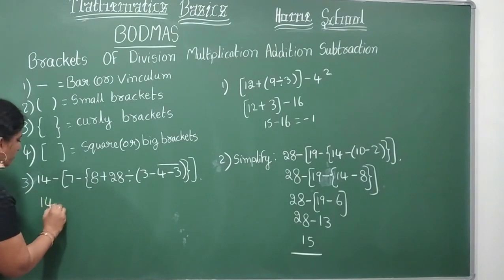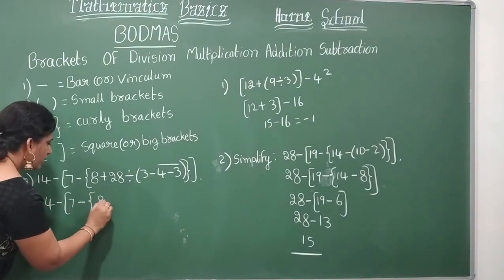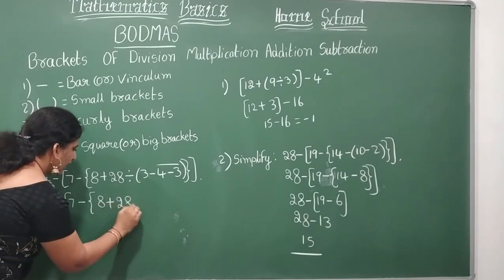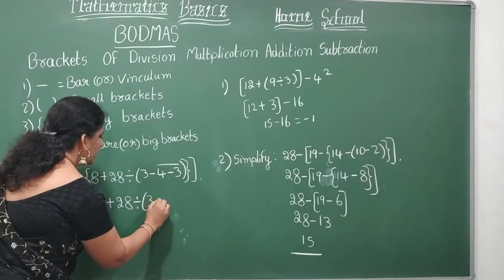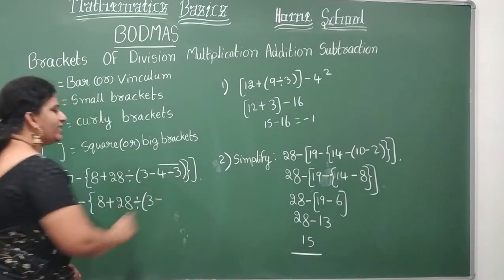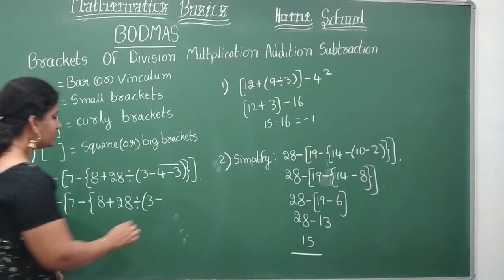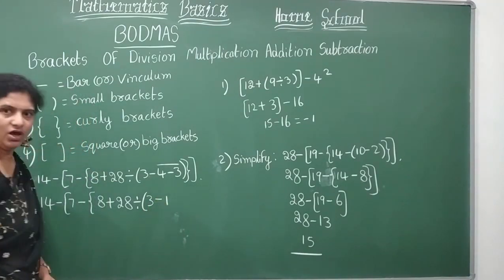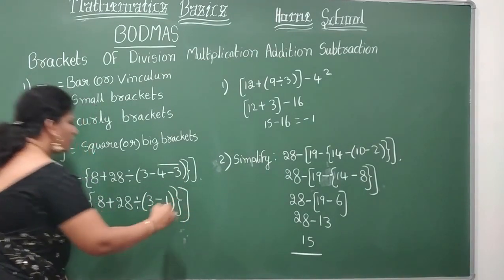So look here. Yes you can see a bar there right? First we simplify bar then round brackets then curl and then square. Then we do the subtraction. Up to that you have to write all. 8 plus 28 divided by 3 minus. What is this bar? 4 minus 3, the value is 1.